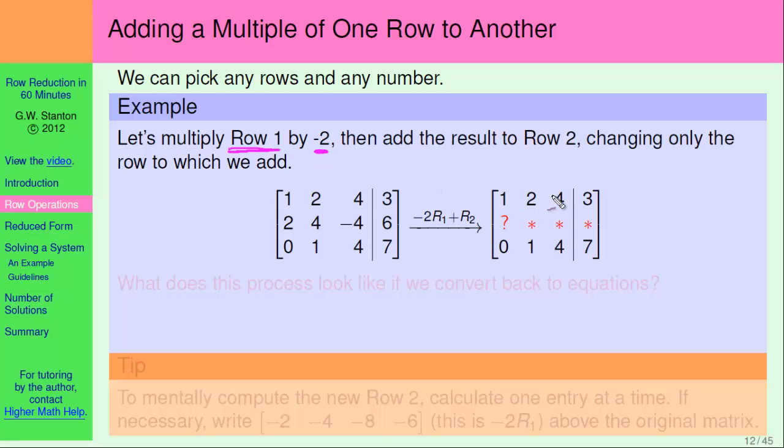And we are going to multiply by negative two. We can pick any number we like, so negative two works. And then we are going to add the result to row two. And then, here's where it gets a little bit complicated. We're going to change only the row to which we add. All right, let's just see how this looks in an example.